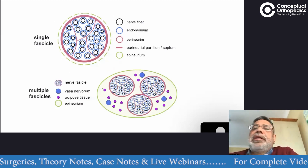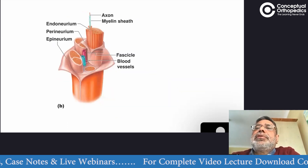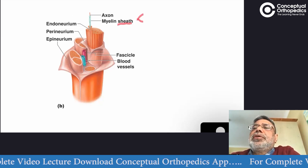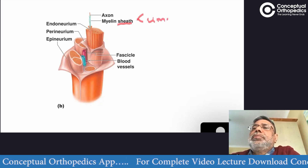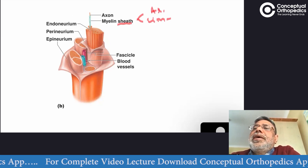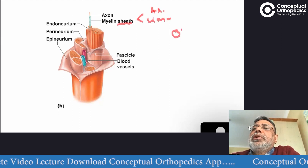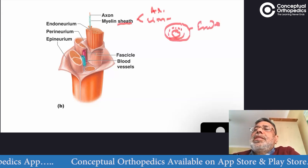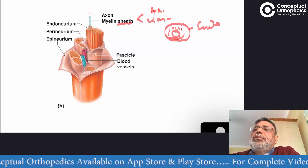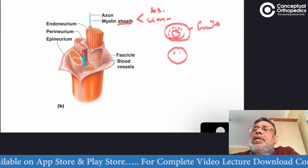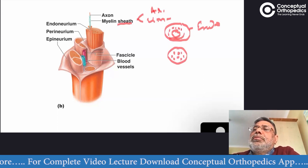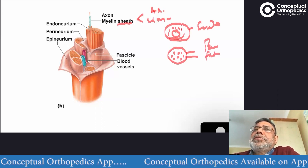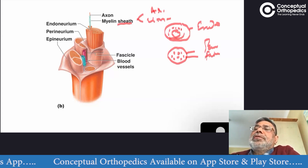If you look at an individual axon, these axons are like tubes and have myelin around them if they are myelinated. Not all nerves are myelinated, but most will be. The axon is surrounded by myelin, and then by the first connective tissue called endoneurium. These tubules of axon surrounded by endoneurium are grouped in a bundle, and then surrounded by another layer of connective tissue called perineurium. This is also called a fascicle — a bundle of axons together surrounded by perineurium.